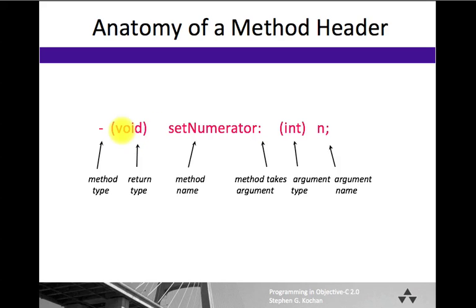The return type is enclosed inside a pair of parentheses. The method name follows next, followed by a colon if the method takes an argument. And as you'll see later, you can have methods that take multiple arguments. The colon is followed by the first argument here, which is an integer enclosed inside a pair of parentheses, followed by the argument name, and that gets followed by a semicolon.